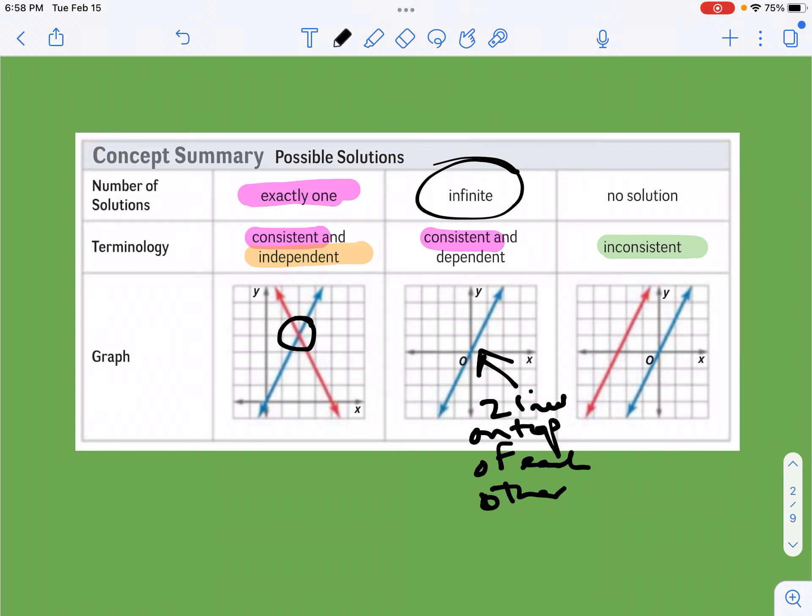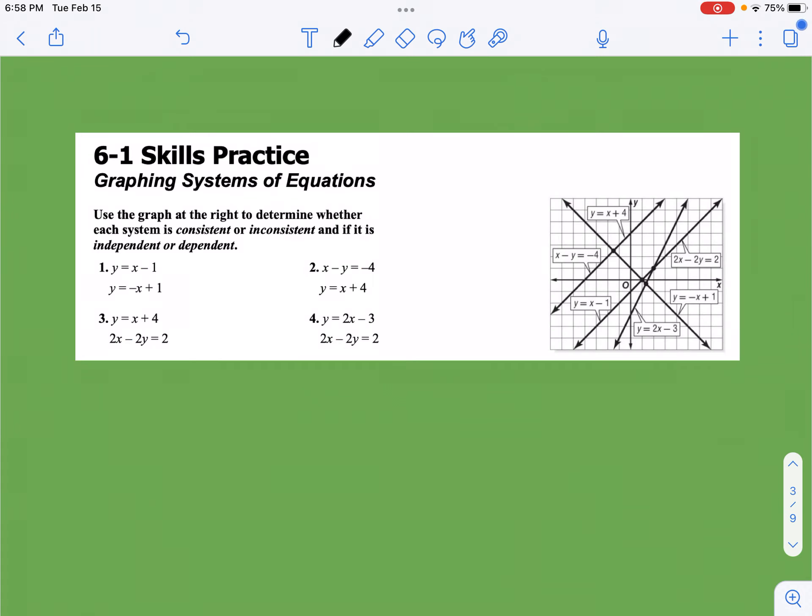What we're going to do now is look at a couple of examples. So let's look at this example right here, and it gives us a lot of choices. I'm going to color code this one up. Let's do yellow for this first one. For number one, we've got y equals x minus 1. I want to use a highlighter.